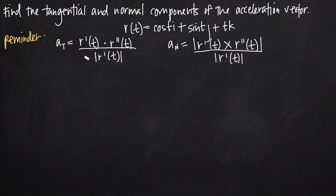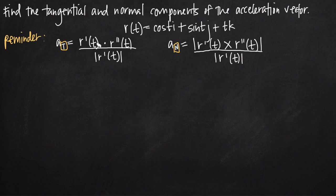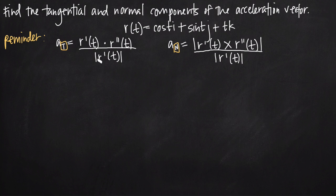For the tangential component, we write a sub T, T for tangent. For the normal component, we write a sub N, N for normal. All we're going to need are the first derivative of our position function r prime of t and the second derivative of the position function. The first derivative of position is velocity and the second derivative is acceleration. We're also going to need the magnitude of the first derivative, and eventually we'll take the dot product of the first and second derivative, and for the normal component, the cross product of the first and second derivative.